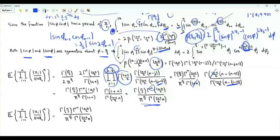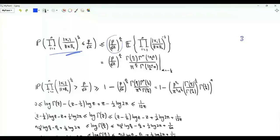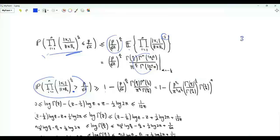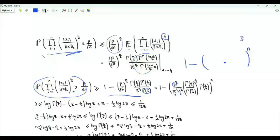Setting alpha = -1/2 in the expectation formula, this probability is upper bounded by (beta/sqrt(n))^{-n/2} times Gamma(n/2) * [Gamma(1/4)]^n divided by pi^{n/2} * Gamma(n/4). We can write the lower bound as 1 minus a bracket raised to the power n, where inside the bracket we have sqrt(beta) * sqrt(pi) * the fourth root of n * Gamma(1/4) * the nth root of [Gamma(n/2)/Gamma(n/4)]. The term inside the bracket depends on n through the ratio Gamma(n/2)/Gamma(n/4), so we need further simplification, ideally bounding this by a constant depending only on beta.